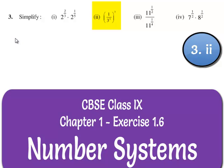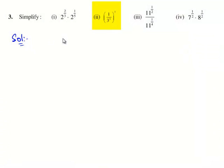Now let us move on to the second bit of the question. The second bit is: simplify 1 by 3 raised to the power of 3, whole raised to the power of 7.